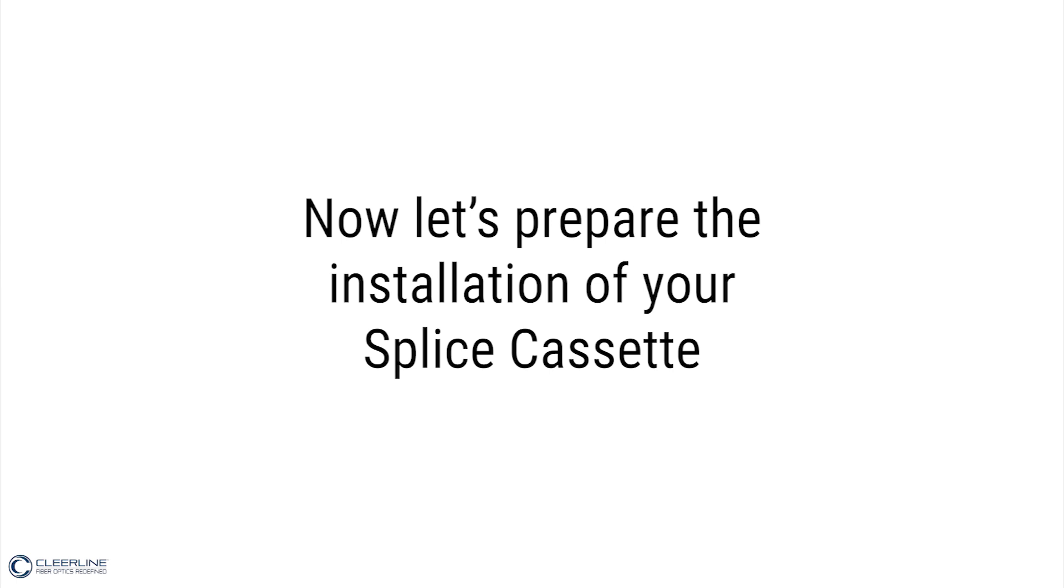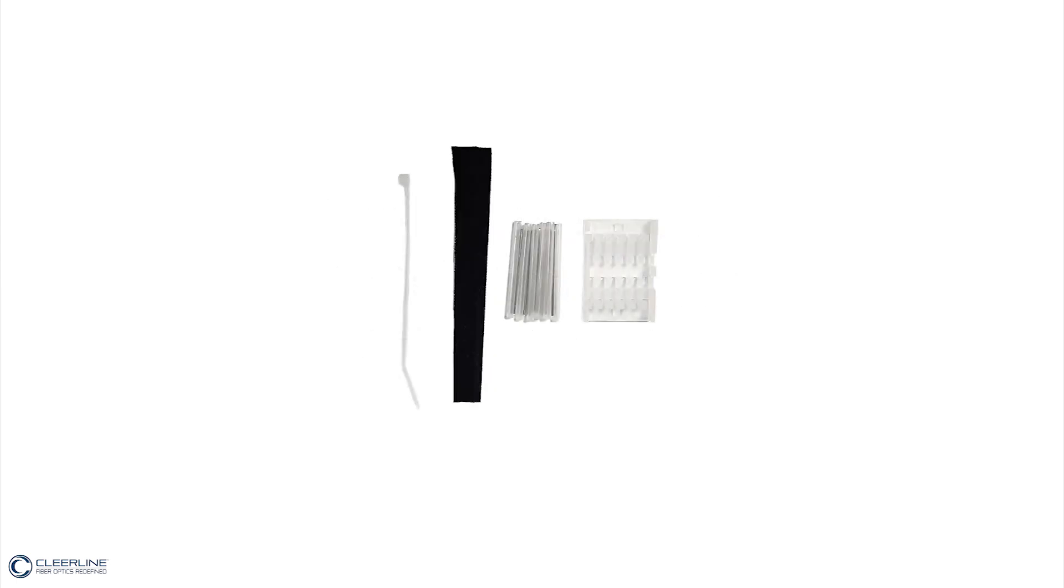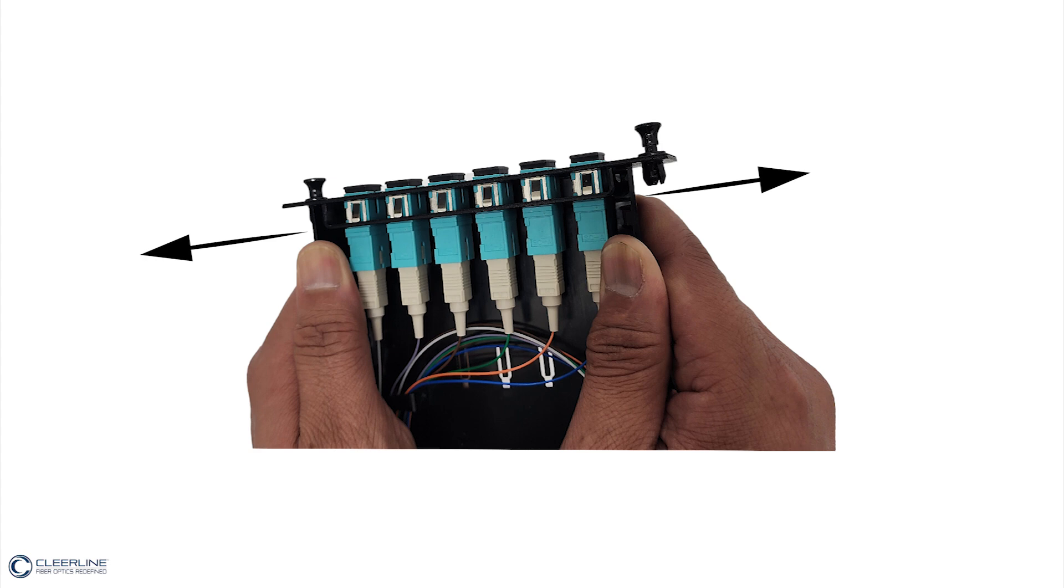Now, let's prepare the installation of your splice cassette. First, remove all items inside the splice cassette and set aside one splice tray, one zip tie, and two Velcro pieces. Now remove the adapter plate by flexing the side panel and gently removing the pigtails from the winding area.